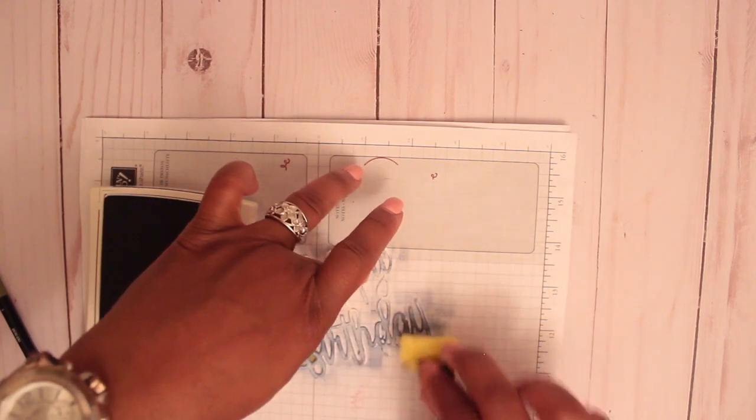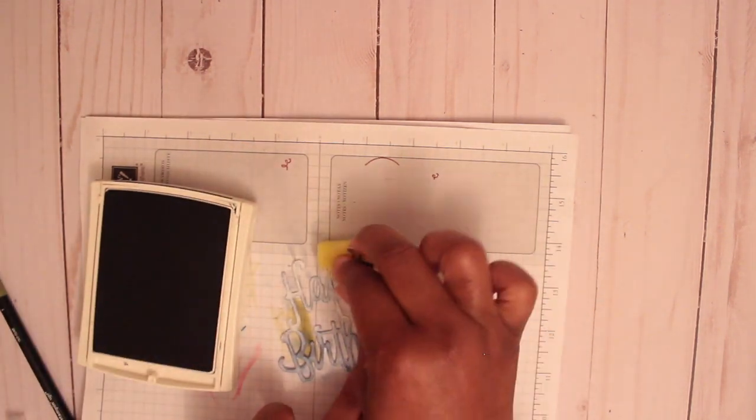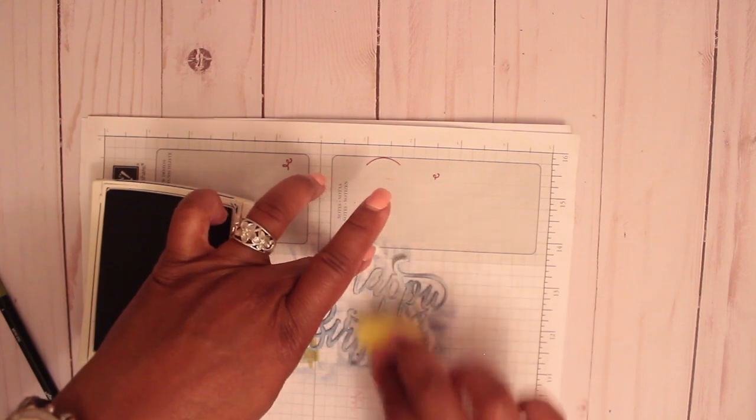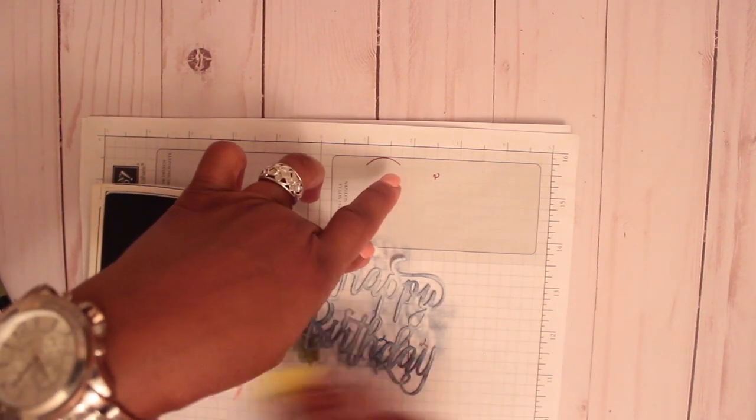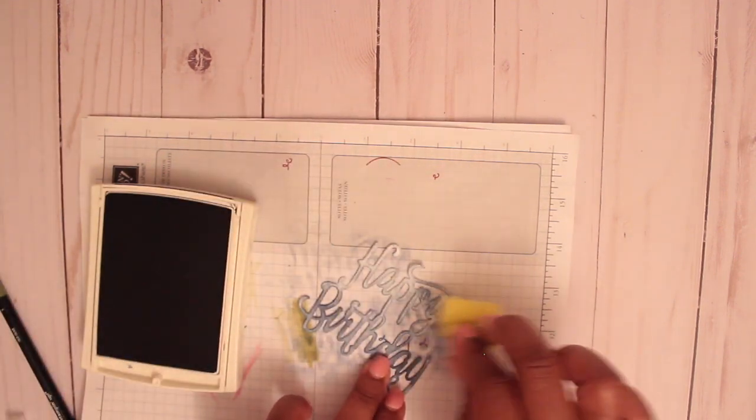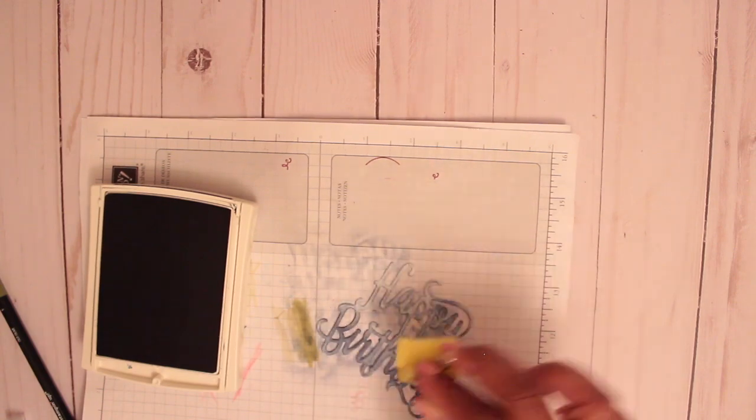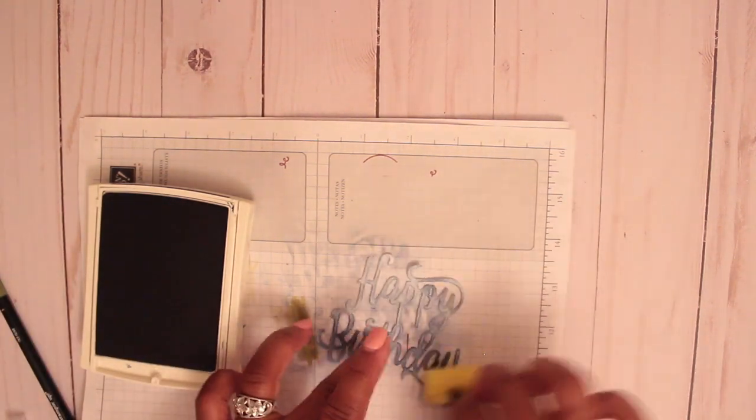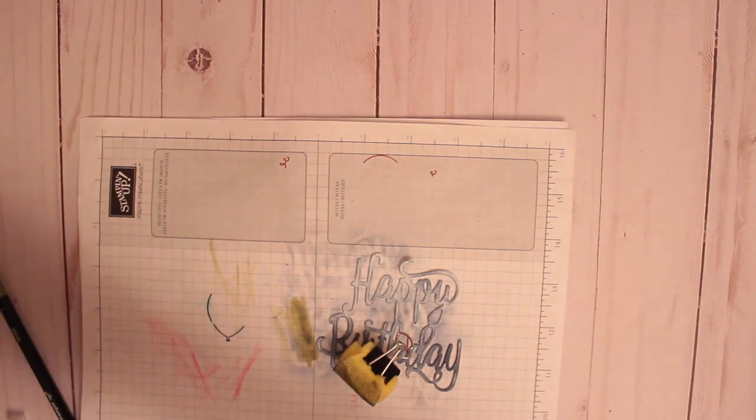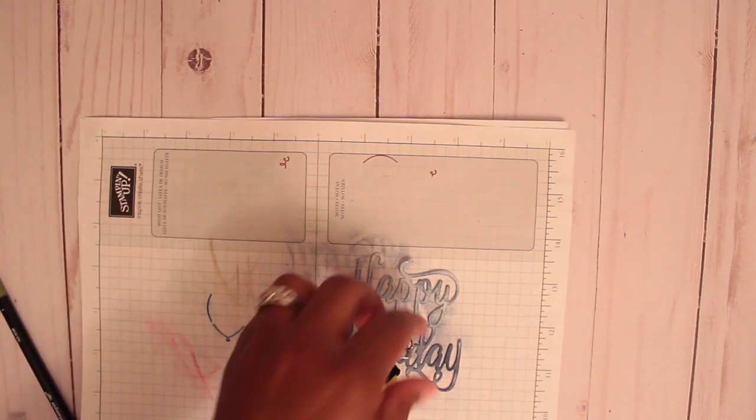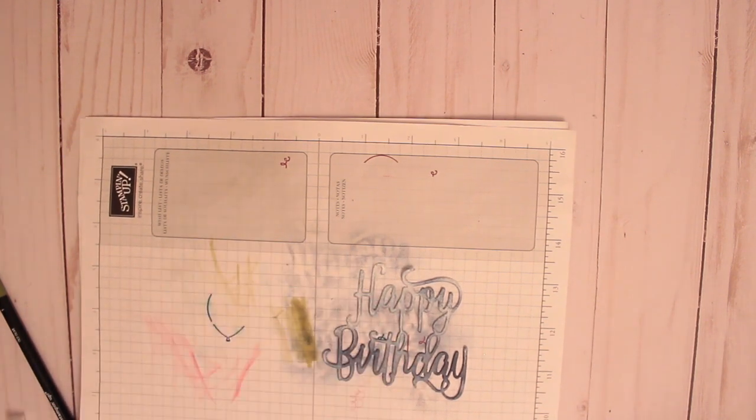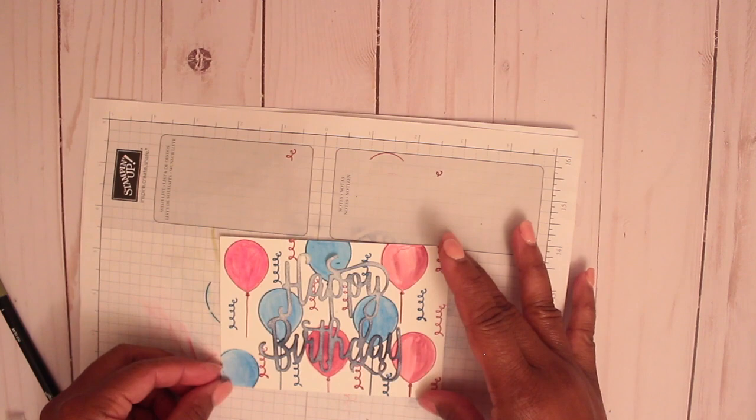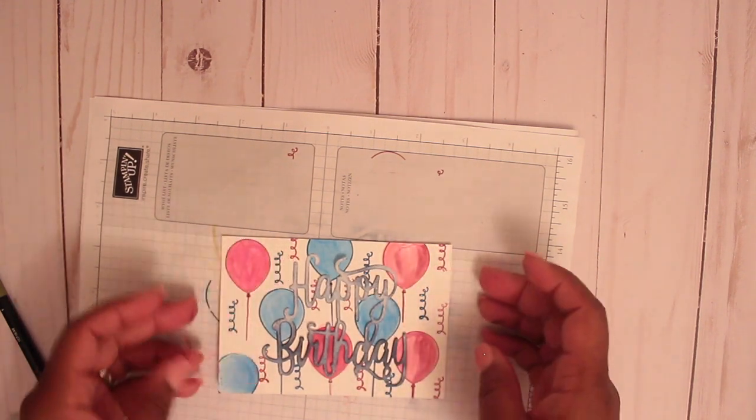You can go over certain areas where you want darker. You're going to have a little bit of white showing through. And get the birthday part to be a little darker than the happy part. I think that looks good. I think that came out pretty good. I'm going to put that there and there.